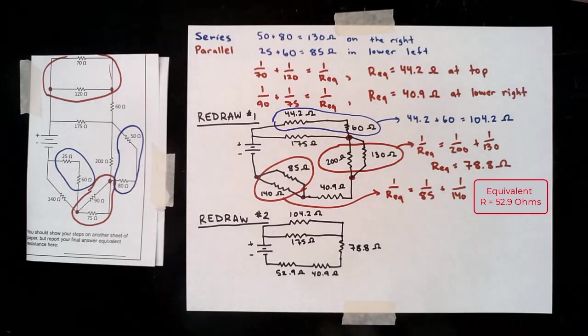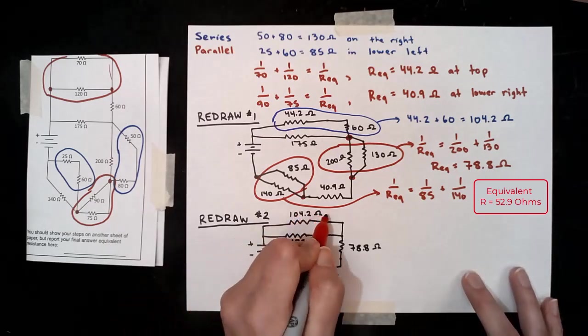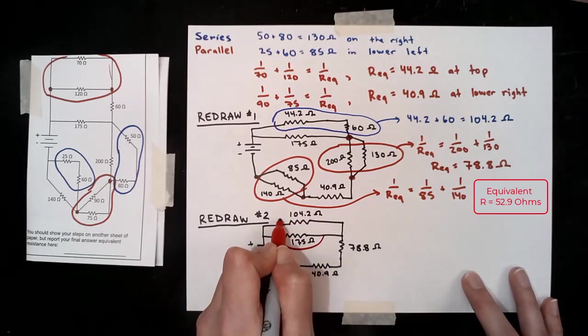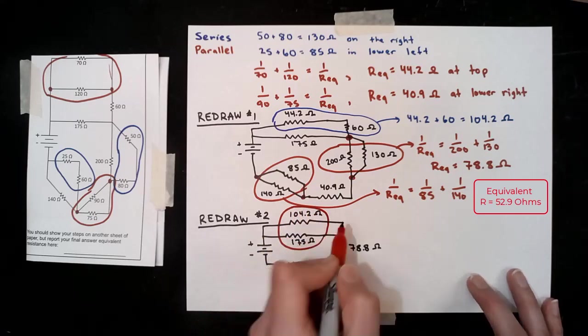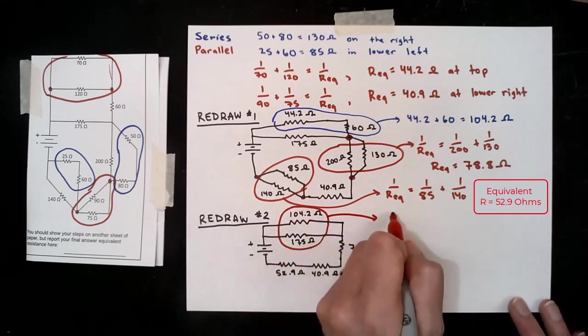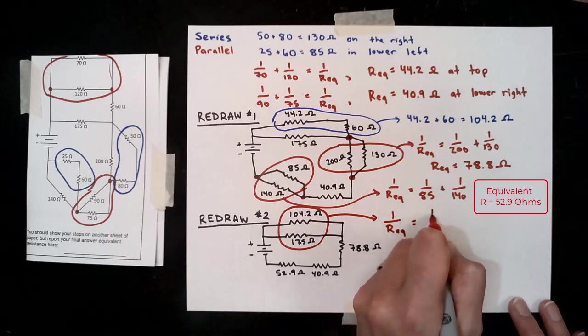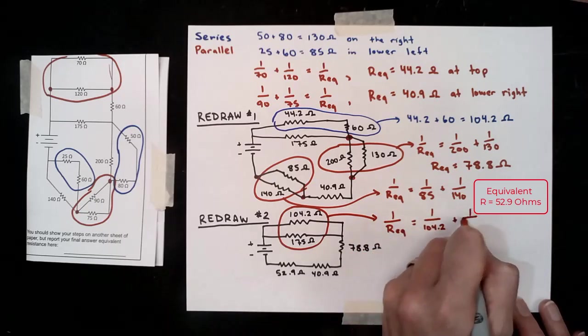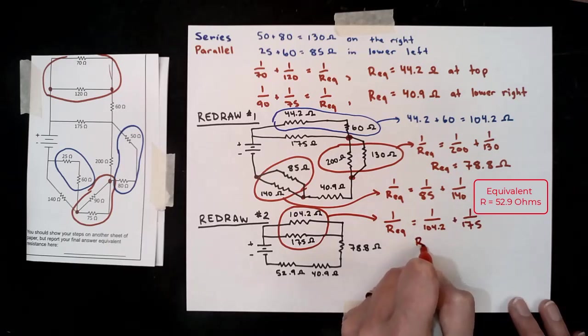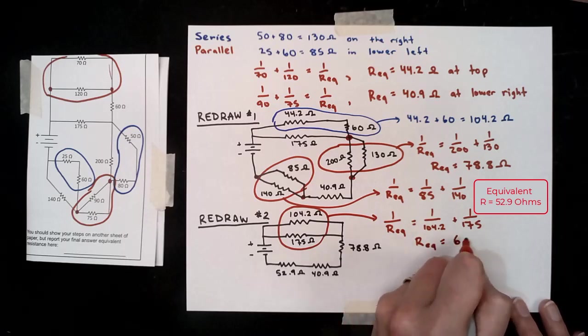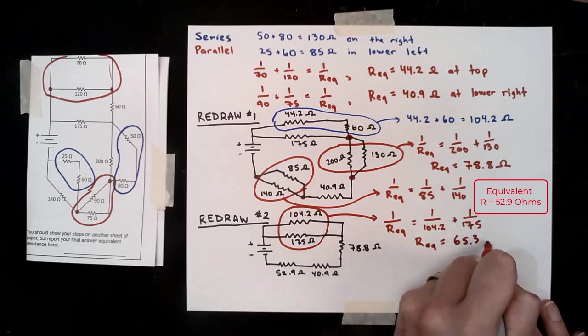So that top pair of resistors is in parallel, and I'll write it appropriately this time. The equivalent resistance of those two is 65.3 ohms.